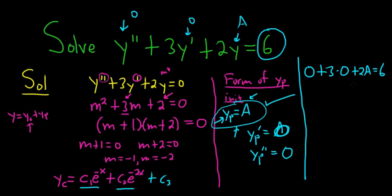So 2A is equal to six, so you divide by two, and so you get A equals three. So it looks like y p is equal to three.